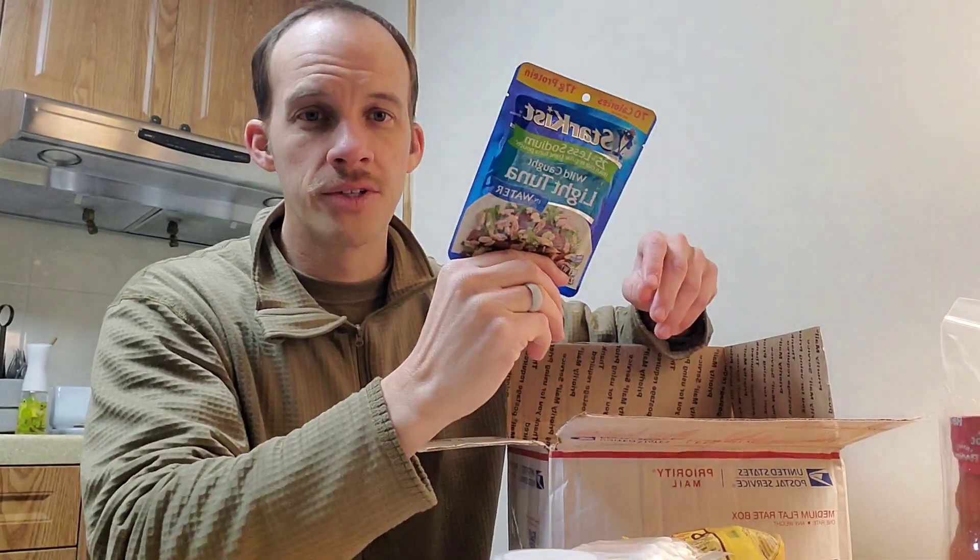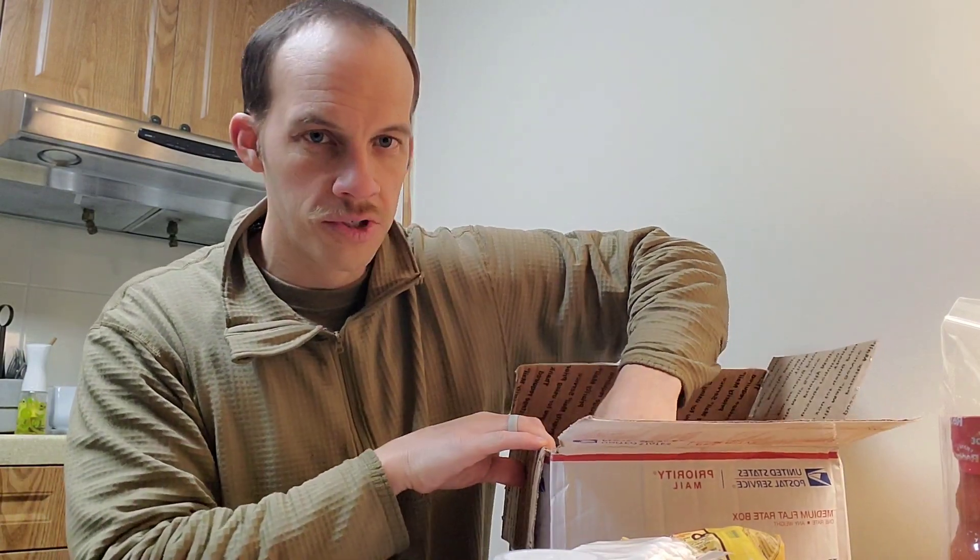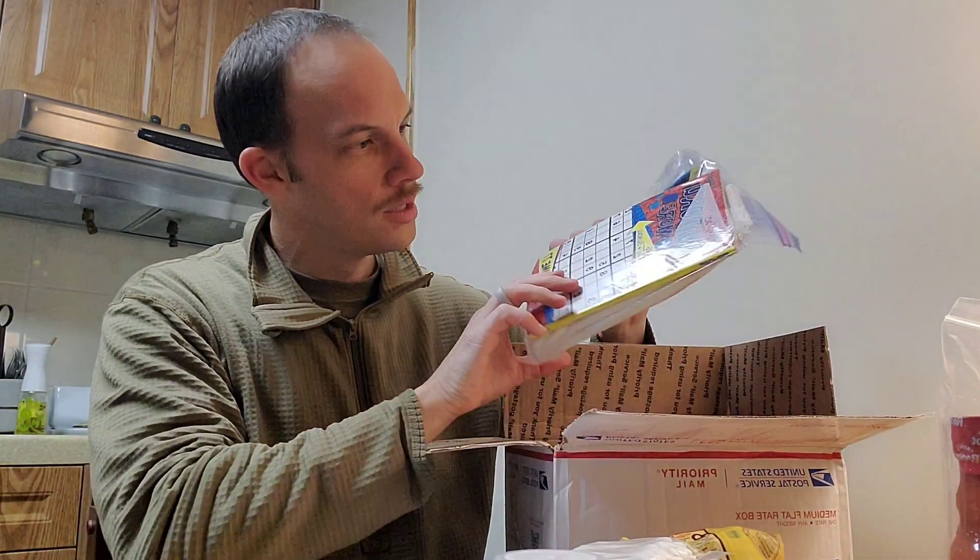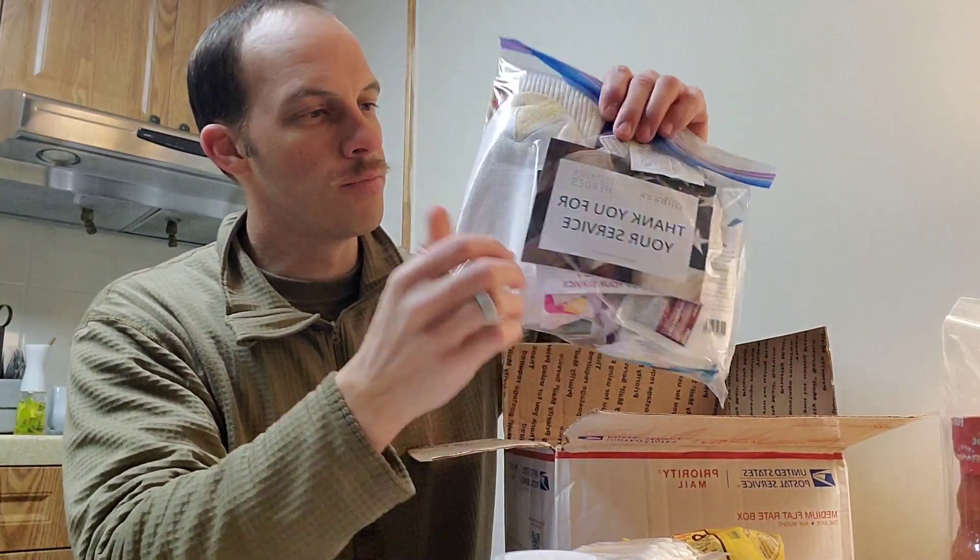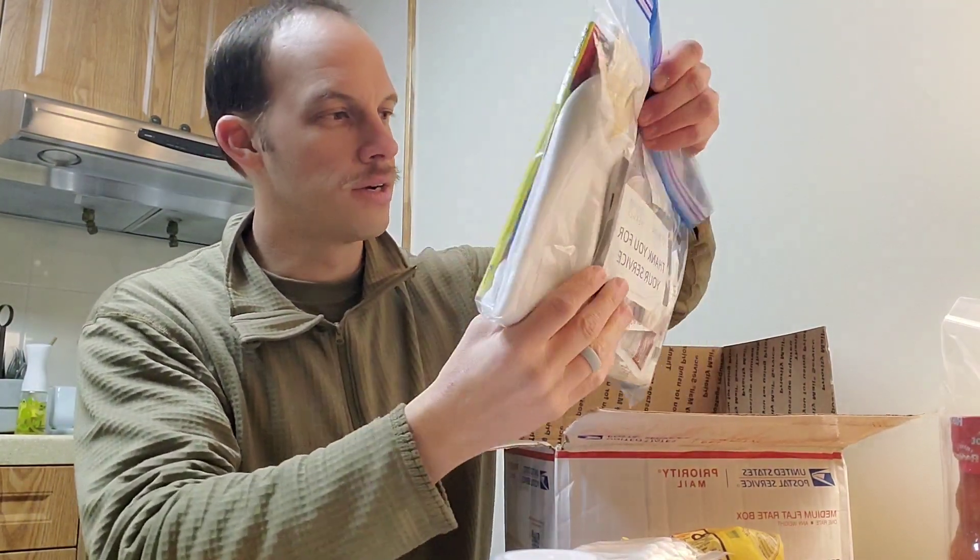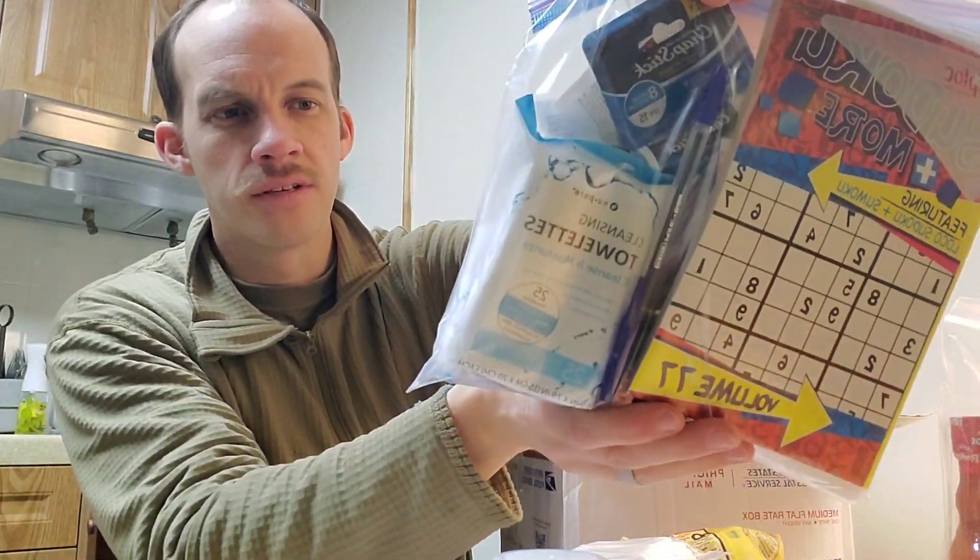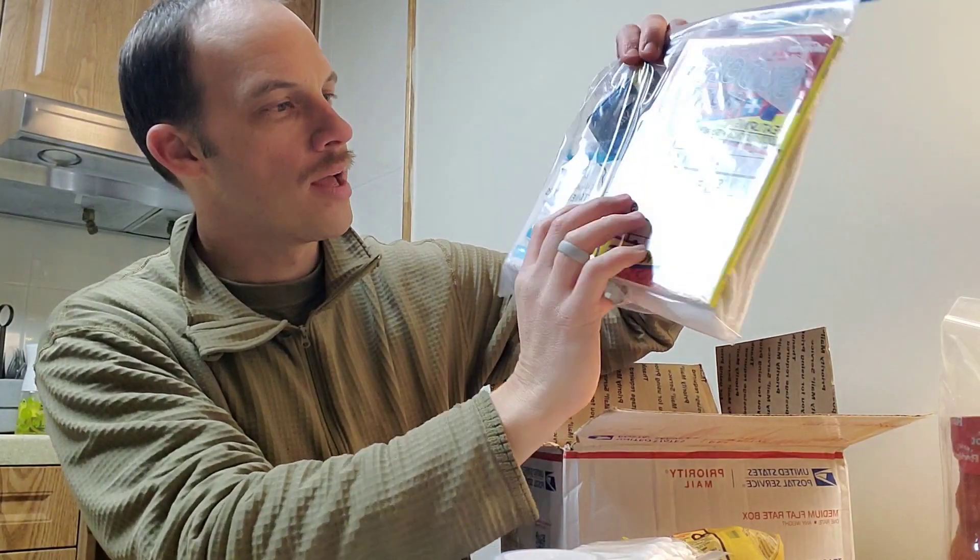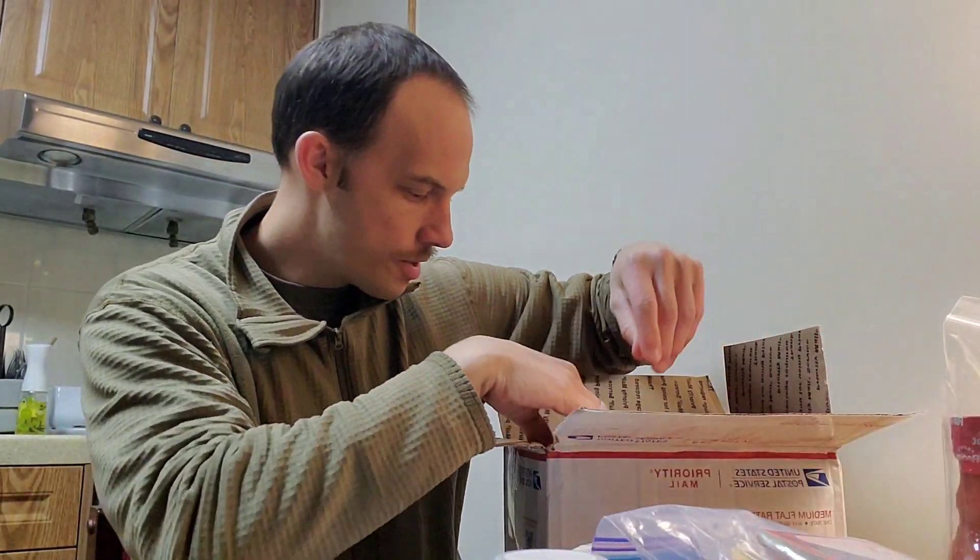I got some tuna. I'm a big tuna eater. I love tuna. Great post-workout meal. And like I said, there's some Sudokus. A little bag. It's got some socks in it, some chapstick. You can see all that. The stuff that's in there. Some moist towelettes. A pen. You know, just a whole bunch of little goodies. Goodie bag.